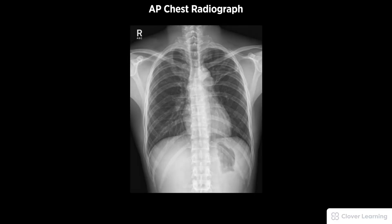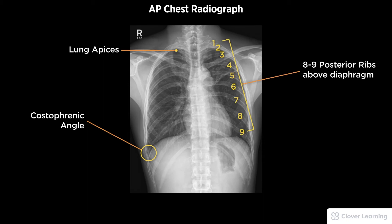A diagnostic AP chest radiograph should be free of motion and rotation, include both lung apices and both costophrenic angles, and demonstrate visualization of eight to nine posterior ribs above the diaphragm.